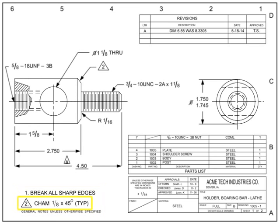Flag notes are notes that apply only where the flag appears in other areas of the drawing, such as the field or parts list. Typically the call-out includes a flag icon. Some drawing standards call these delta notes, as the note is indicated by a triangle in lieu of a flag. Flag notes can be annotated by either alpha or numeric characters.